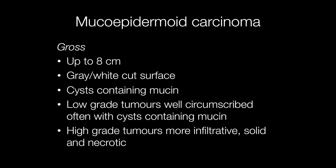Grossly, a typical mucoepidermoid carcinoma is around 8 cm across with a grey or white cut surface, and there may be cysts containing mucin. Low grade tumours tend to be well circumscribed and often contain cysts containing mucin, whereas the high grade tumours have a more infiltrative margin with solid and necrotic areas.